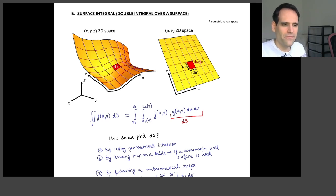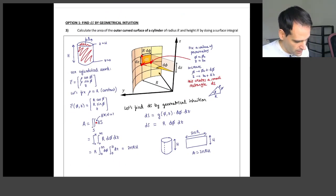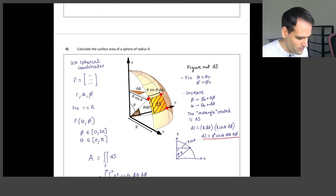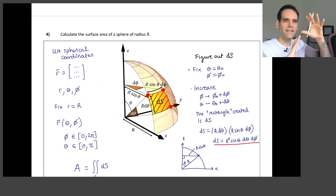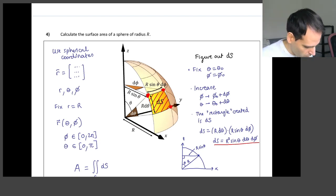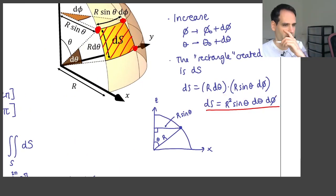So now we have seen examples of the first method of finding dS using geometrical intuition, right? And we did it for a cylinder, and this was relatively easy. So dS was r dφ dz. And then we did it for a sphere, and this was much more complicated because keeping the geometry right is a bit messy. But we arrived at dS equals r² sin θ dθ dφ.